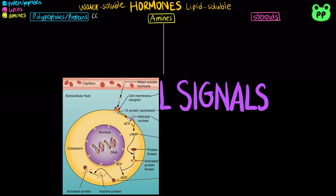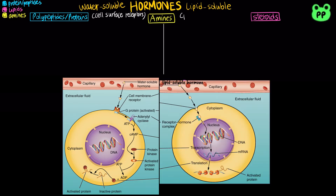Water-soluble hormones are secreted by exocytosis, travel freely in the bloodstream, and bind to cell surface receptors. Whereas lipid-soluble hormones diffuse across cell membranes, travel in the bloodstream bound to transport proteins, and diffuse through the plasma membrane of target cells. They often act as transcription factors that are involved in regulating gene expression.